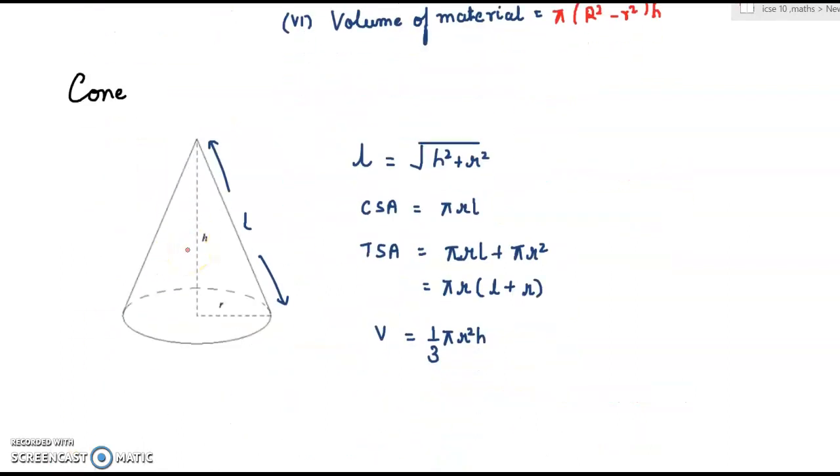Now we'll move to cone. You can see the height of the cone is denoted by h. The radius of the cone is denoted by small r. And this is the slant height, it is denoted by L. Normally h is perpendicular to r in all cases for cone. Now we can apply Pythagoras theorem here. That means L² = h² + r². So we'll take under root on both sides. We'll get L = √(h² + r²).